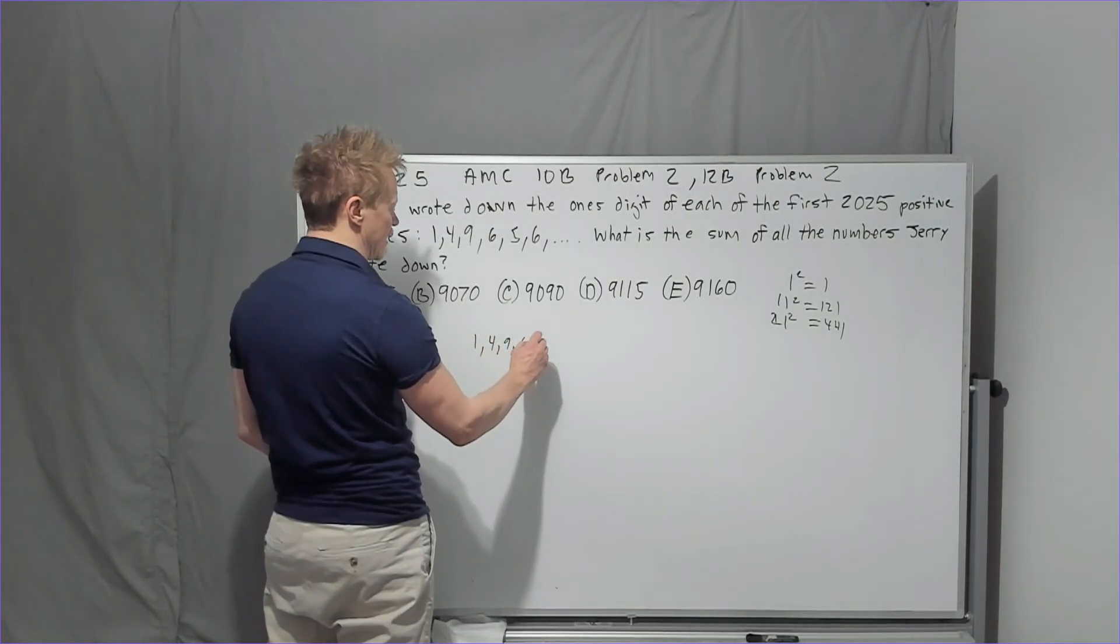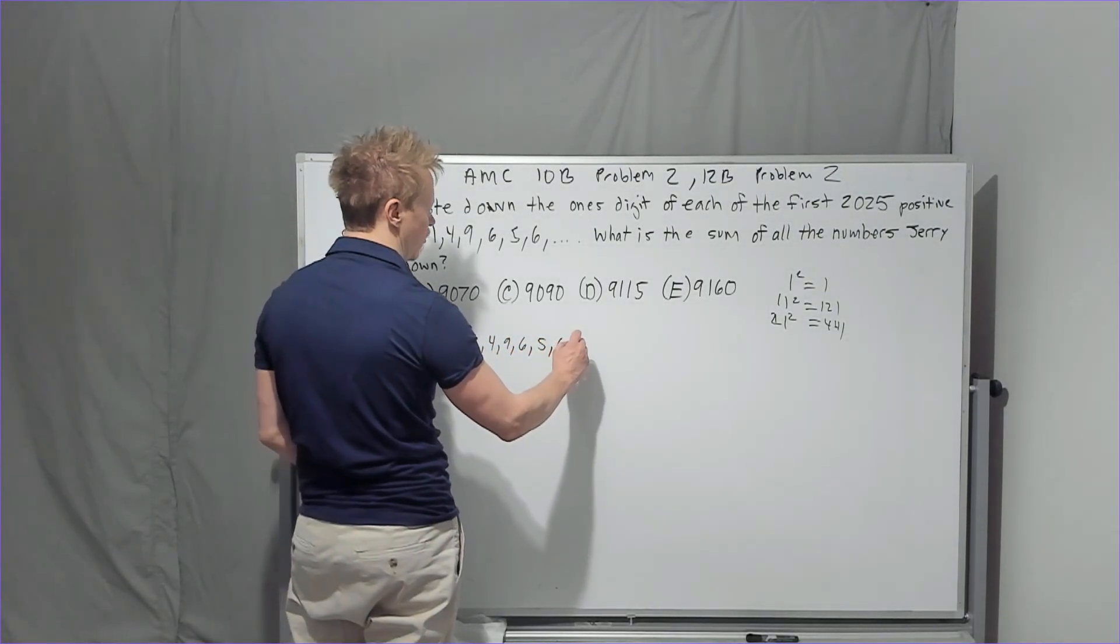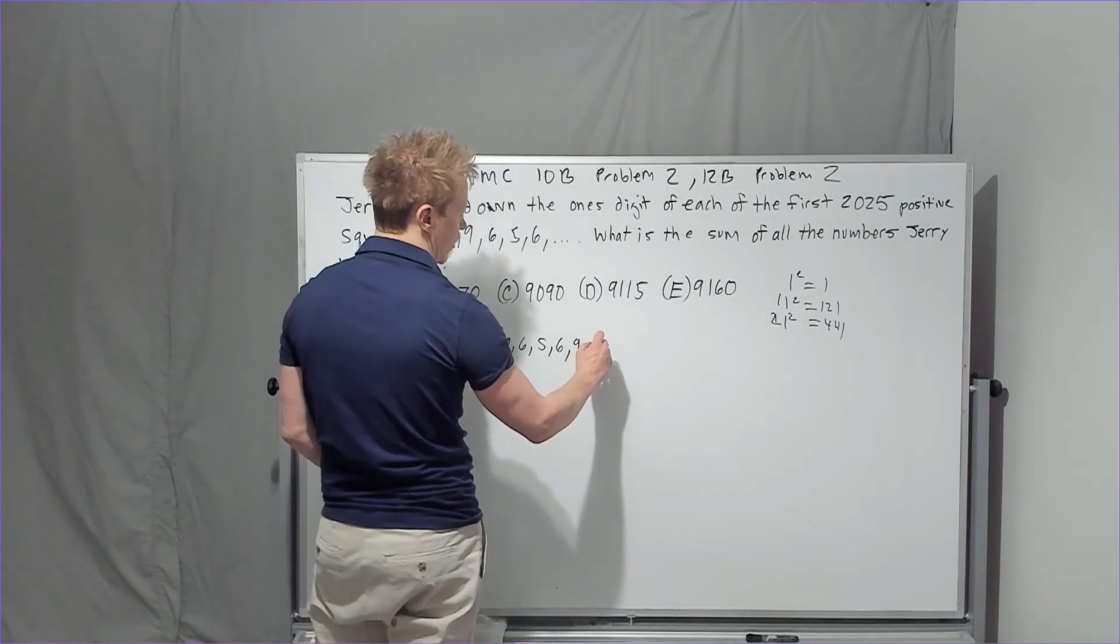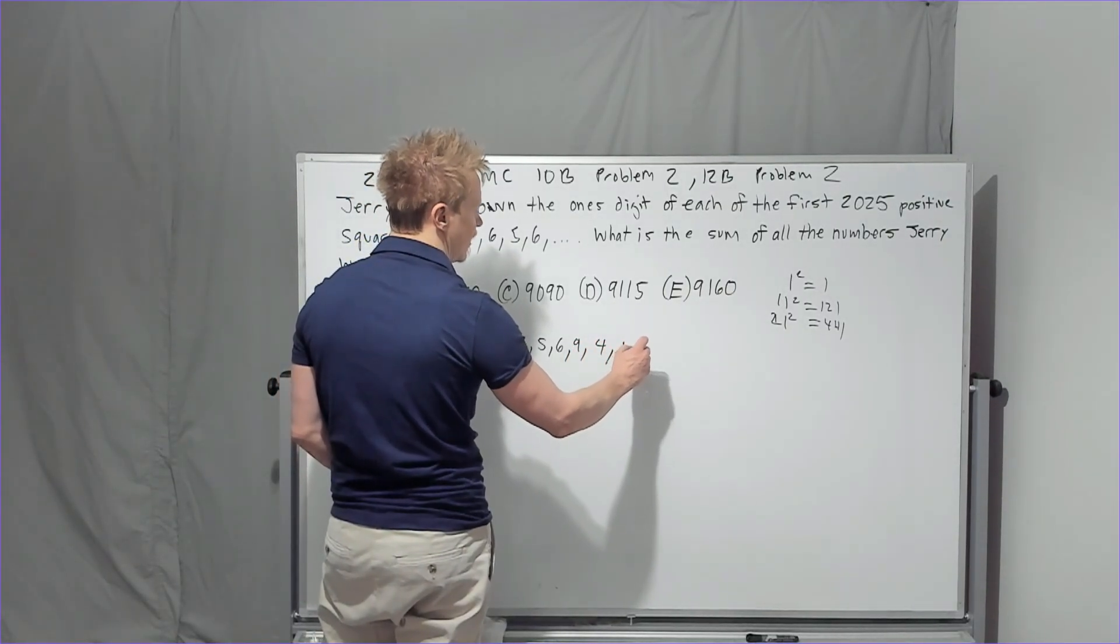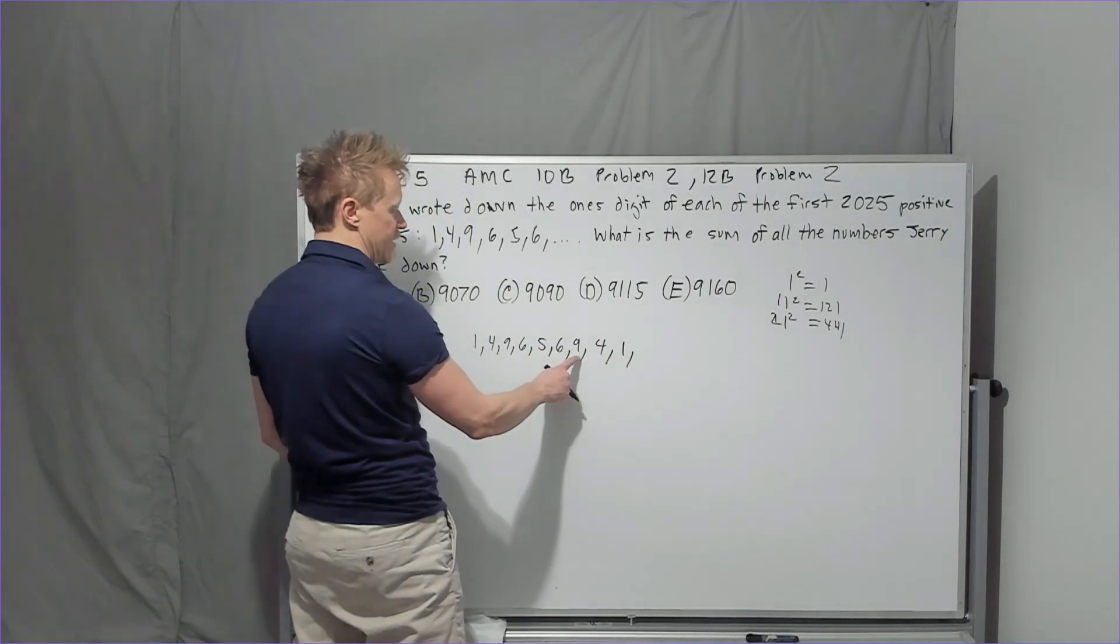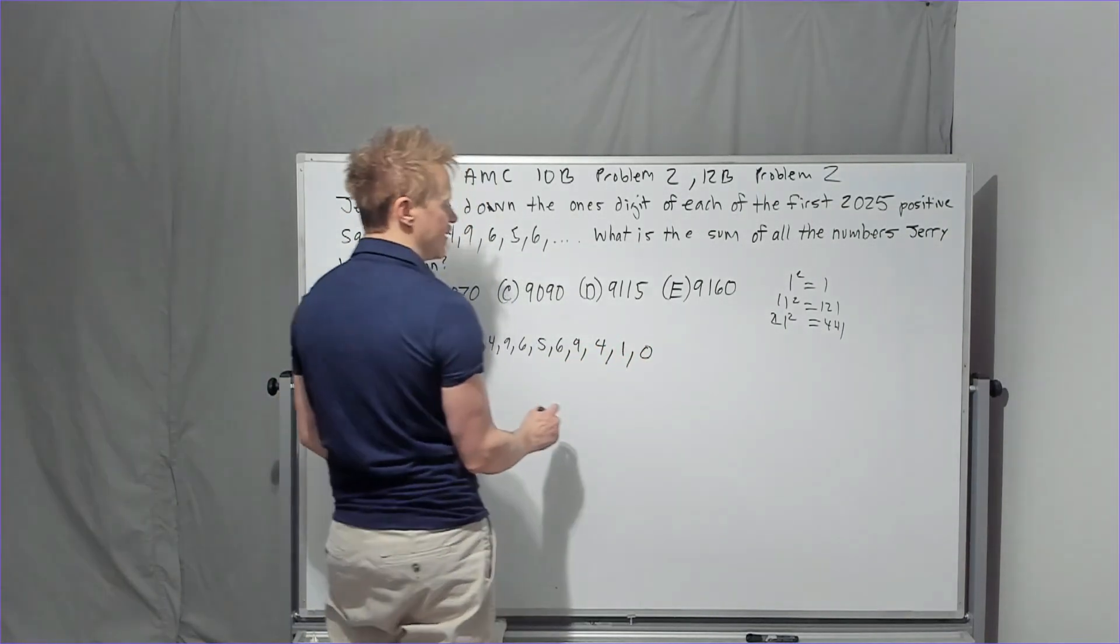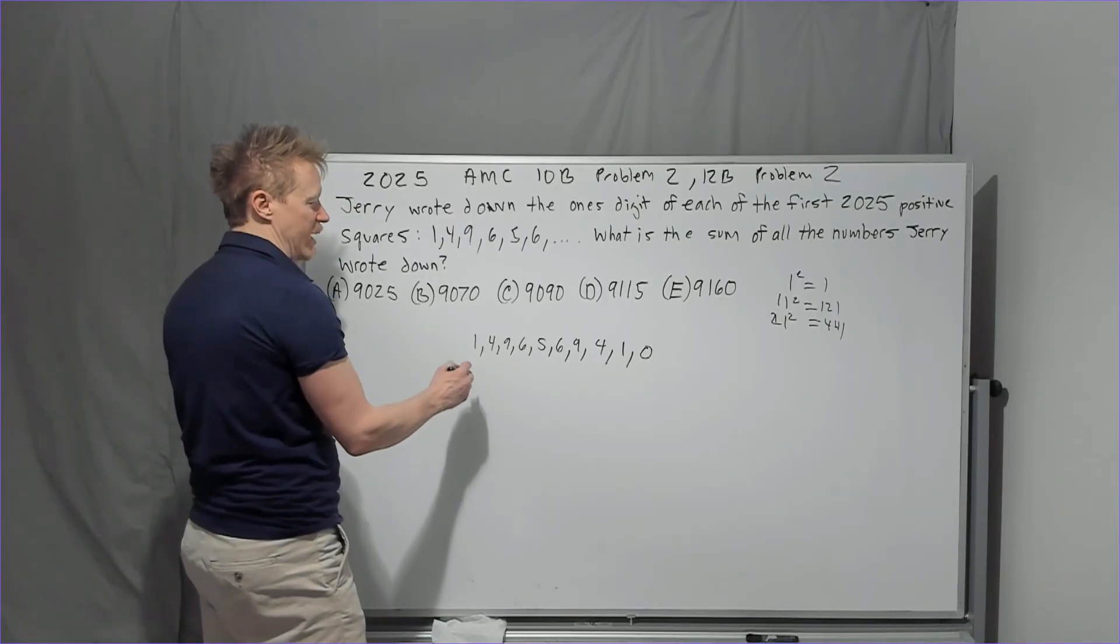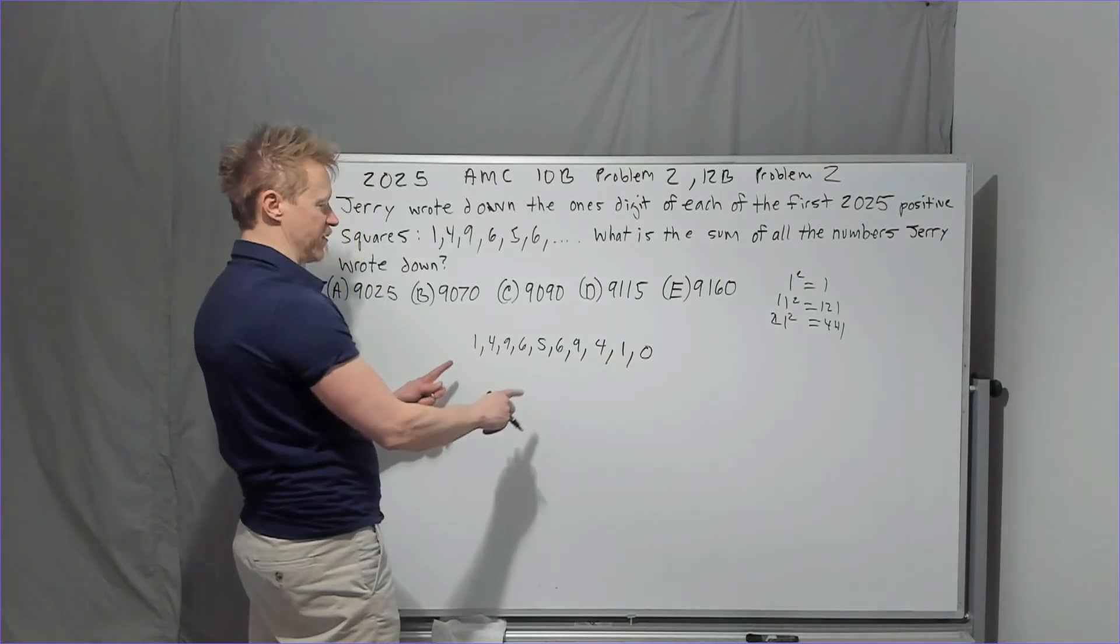So we'll just write these out. 1, 4, 9, 16, 25, 36, 49, 8 squared, 64, 81. Yeah, 49, 64, 81, 1, 2, 3, 4, 5, 6, 7, 8, 9, and 10, the zero. So at that point, every group of 10 will have the same sum.